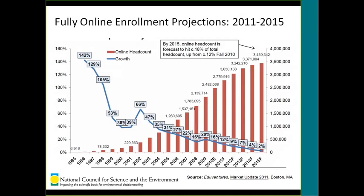Projections for the next five years or so were done by a consulting firm, EduAdventures in Boston, and here's a chart they put together. They're projecting growth to slow down a little bit in the next few years — from double-digit growth in the past six to eight years to single-digit growth.